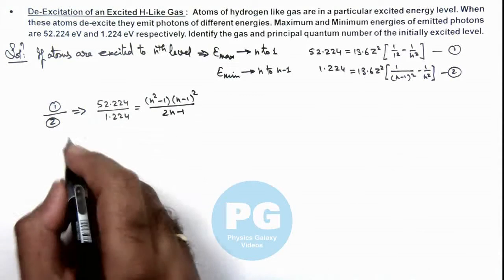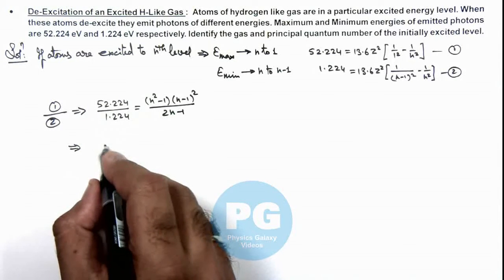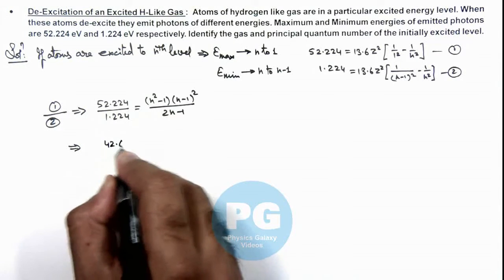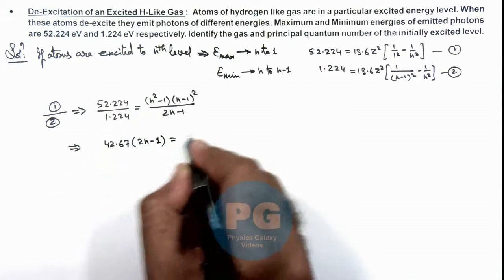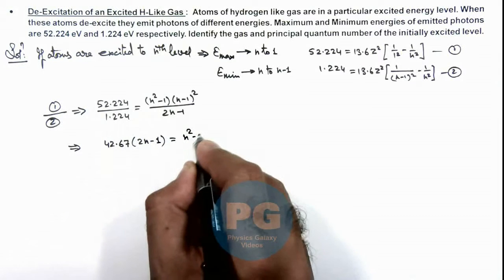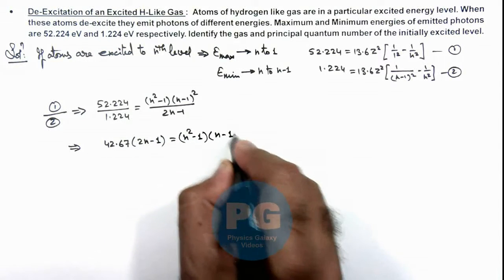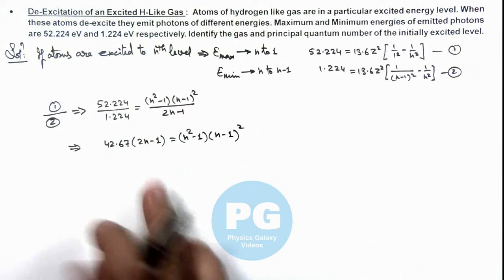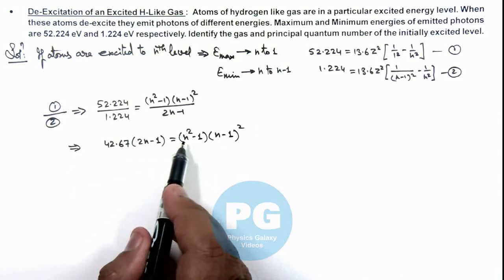Further on simplifying after cross multiplication, we will get 42.67 × (2n - 1) = (n² - 1)(n - 1)². You can see this is a 4th order equation and that is not very easy to solve, but we know one thing that the value of n is an integer.